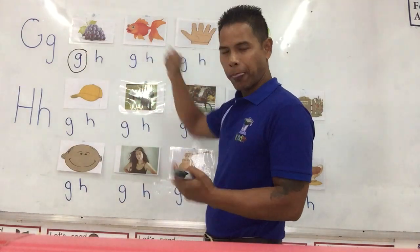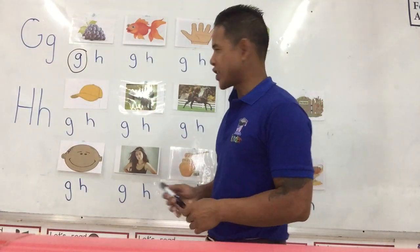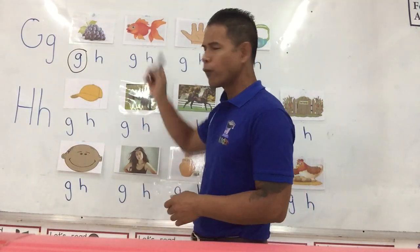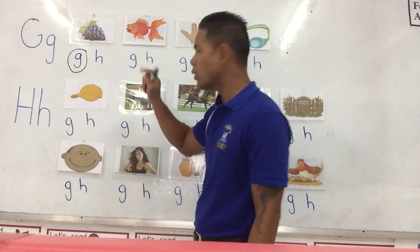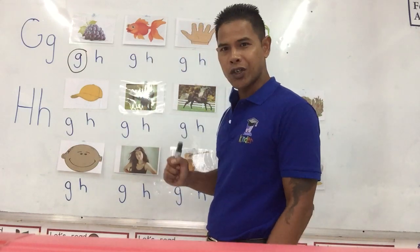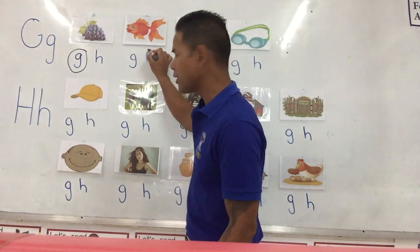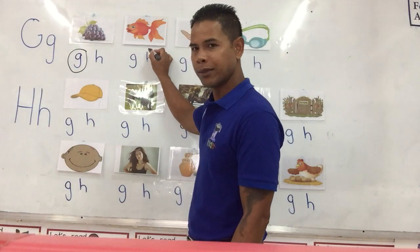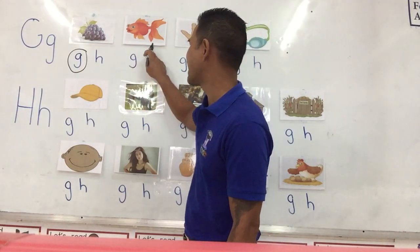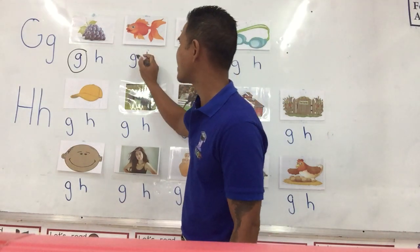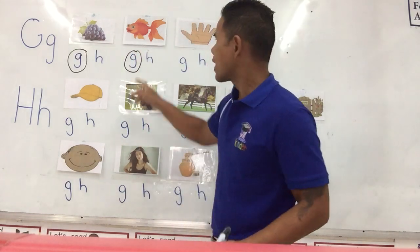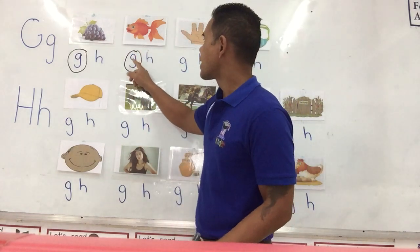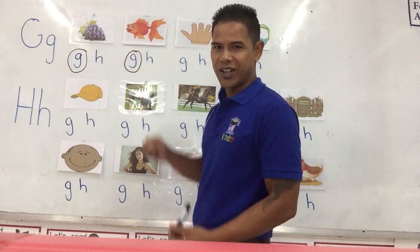Next one — goldfish. Goldfish. What sound do you hear? Do you hear the letter G or the letter H? Letter G. Yes. So we circle the letter G for goldfish. Guh. Goldfish.